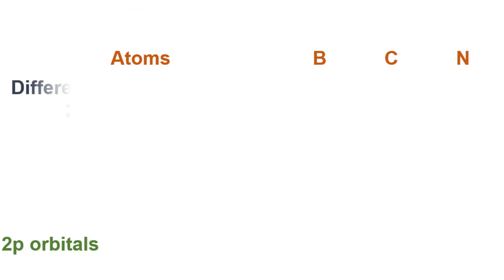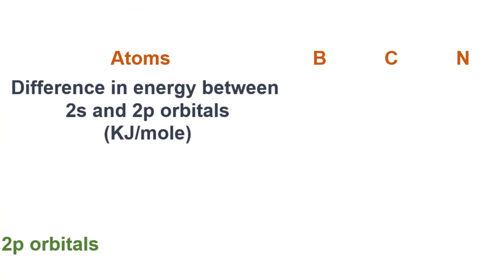The difference in energy between 2s and 2p orbitals in the case of boron is 449 kilojoules per mole, in the case of carbon it is 510 kilojoules per mole, and in the case of nitrogen it is 570 kilojoules per mole. This energy gap is very small compared to the other atoms of the second shell, that is oxygen, fluorine, and neon.